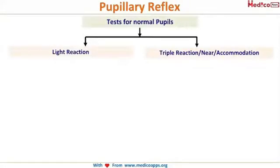We know that the pupillary reactions are of two types: the first one is the light reaction and the second one is the accommodation reaction, or the near reaction, or the triple reaction.